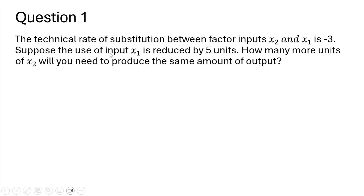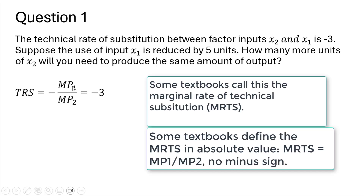Question 1. The technical rate of substitution between factor inputs, input 2 and input 1, is minus 3. Suppose that the use of input 1 is reduced by 5 units, how many more units of input 2 will you need to produce the same amount of output? We'll start by defining the technical rate of substitution as minus the marginal product of input 1 divided by the marginal product of input 2. In this problem, we're told that equals minus 3, the TRS equals minus 3.